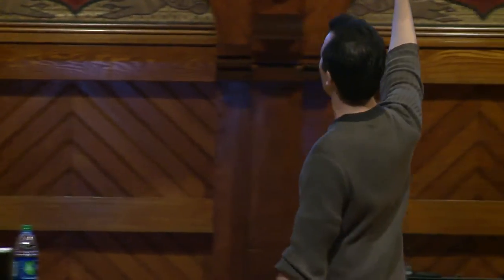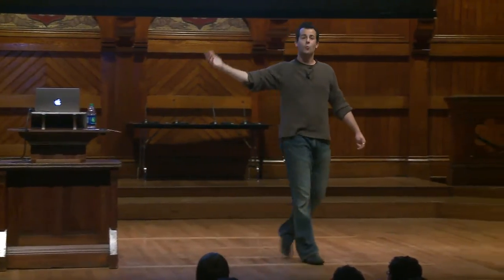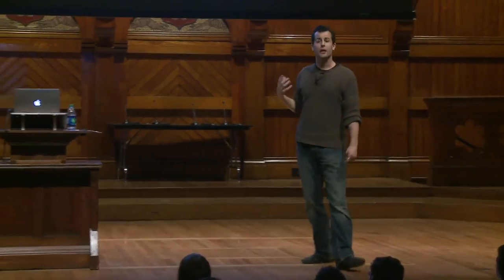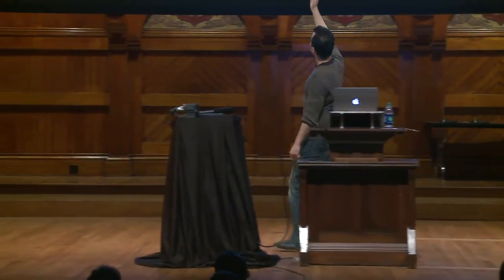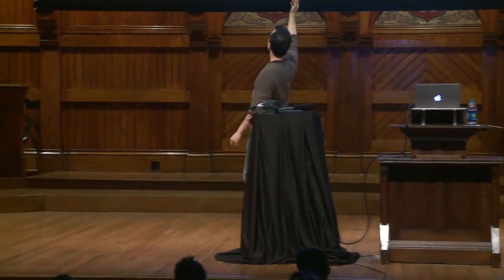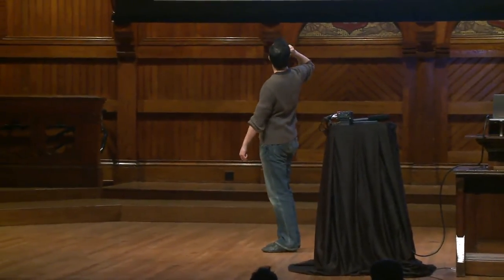If we simplify the world and say this is Rob in black and white, we can represent it with binary. Using 1 or 0, we can express an image like Rob's smiling face with a pattern of bits: 1 represents white, 0 represents black, and so on across each pixel.